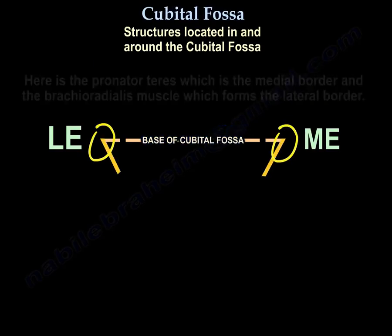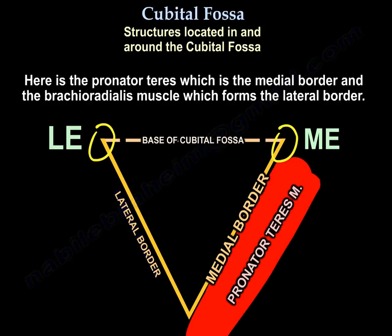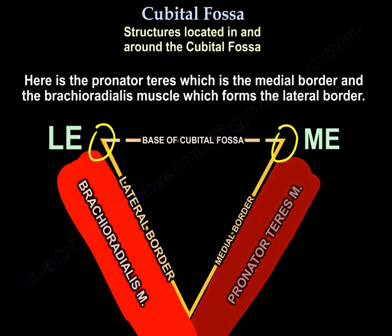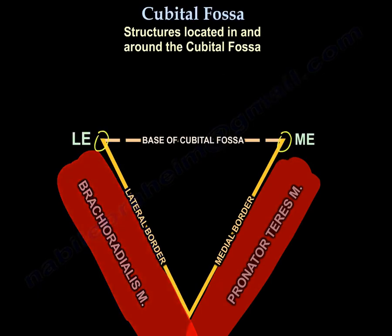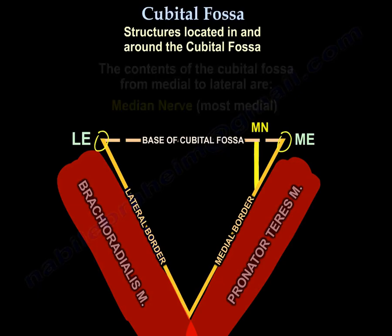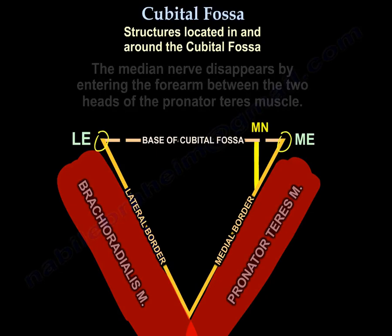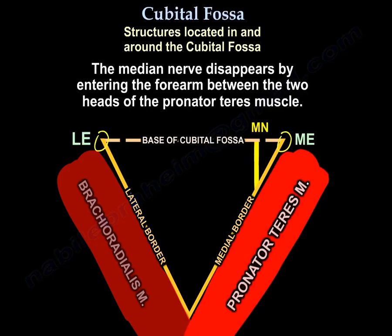Here is the pronator teres, which is the medial border, and the brachioradialis, which is the lateral border. The contents of the fossa from medial to lateral: the median nerve is the most medial. The median nerve disappears by entering the forearm between the two heads of the pronator teres muscle.